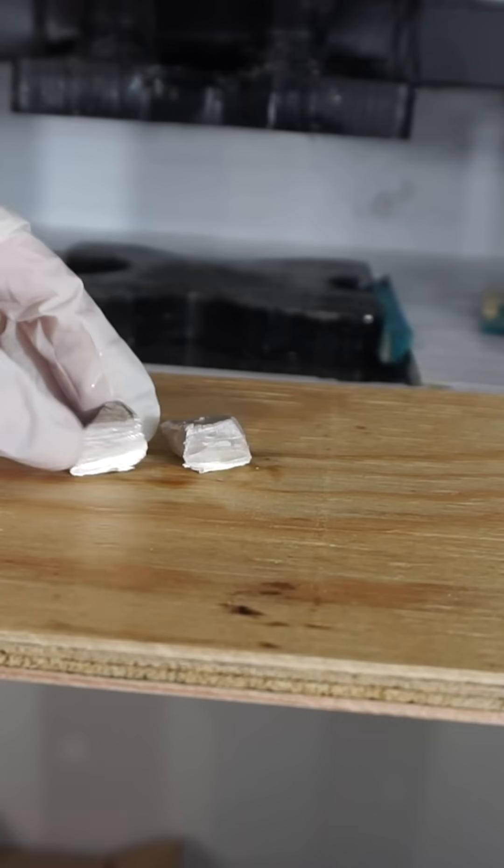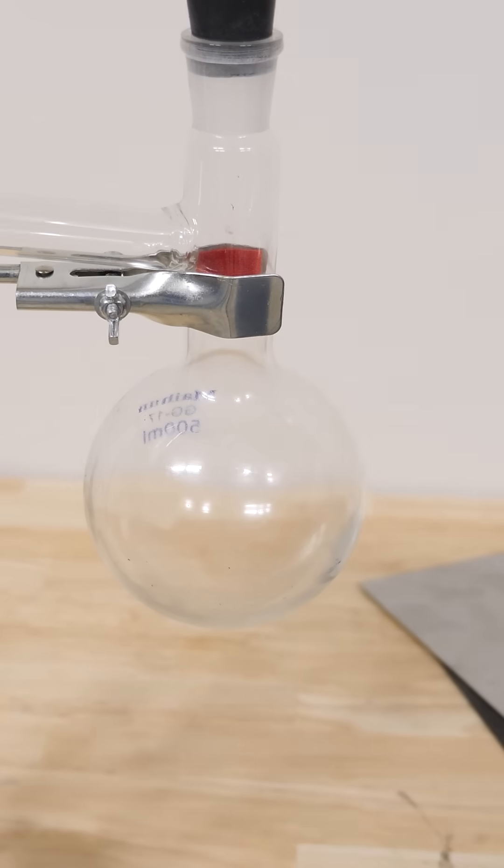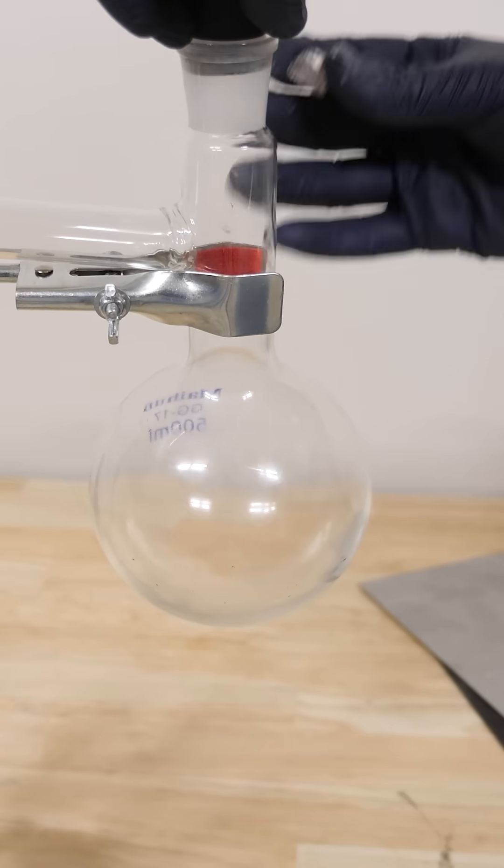But we don't need to get it that hot if we put it in a vacuum. If we lower the pressure, then the boiling temperature of the sodium will also drop, so we can actually get it to vaporize at a much lower temperature of just a few hundred degrees Fahrenheit.